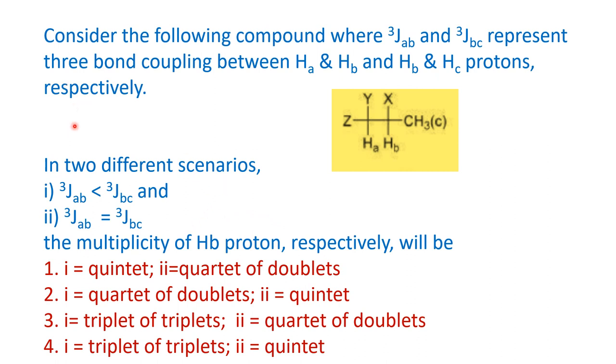In the question, we have been given two scenarios. The first scenario is JAB is less than JBC. So the splitting due to AB is different from the splitting due to BC. Because they are different, we know that B has a neighbor as one proton. So here the N plus 1 rule will lead to a doublet in this particular case. And now on the other side, it is having 3 protons. So N is equal to 3. On the other side, it will be N plus 1 which is equal to 3 plus 1 which is equal to 4.